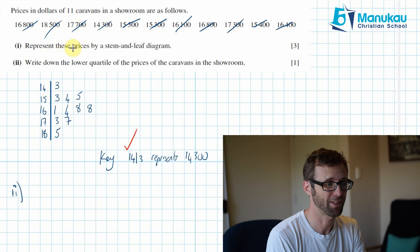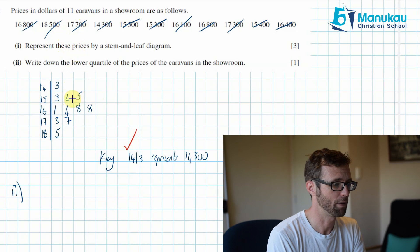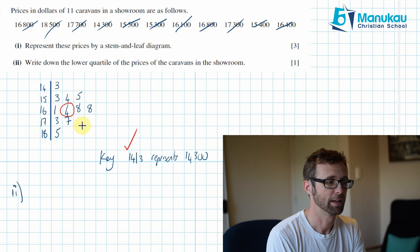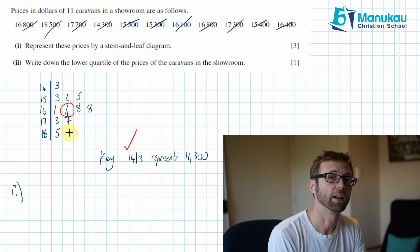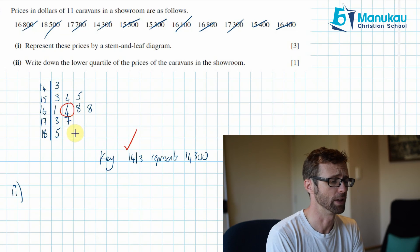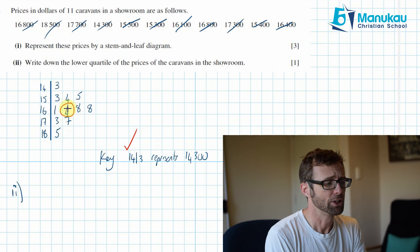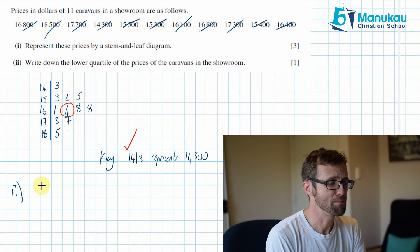So that means our sixth item of data is going to be our median. So 1, 2, 3, 4, 5, 6. Make sure you're going up in order from lowest to highest or back highest to lowest. Make sure you do that. Otherwise, you'll stuff it up. Okay. So we've got our median is equal to 16,400.